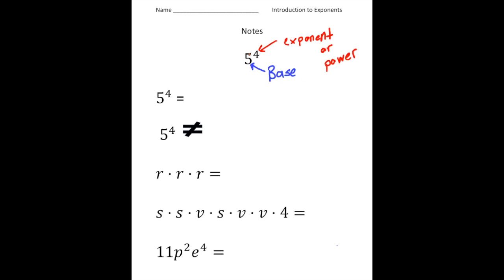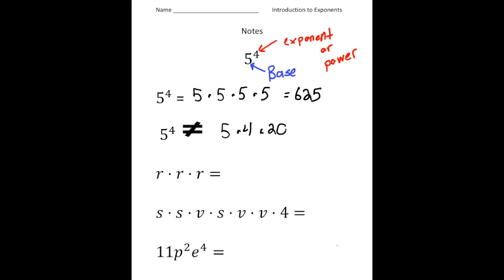Alright, so here we have 5 to the 4th power. So what does this mean? This really means 5 times 5 times 5 times 5. Then 5 times 5 is 25, times 5 is 125, times 5 gives us 625. Now what does this not mean? A common error is to say that 5 to the 4th power is 5 times 4, which is 20 — that's definitely not the case.